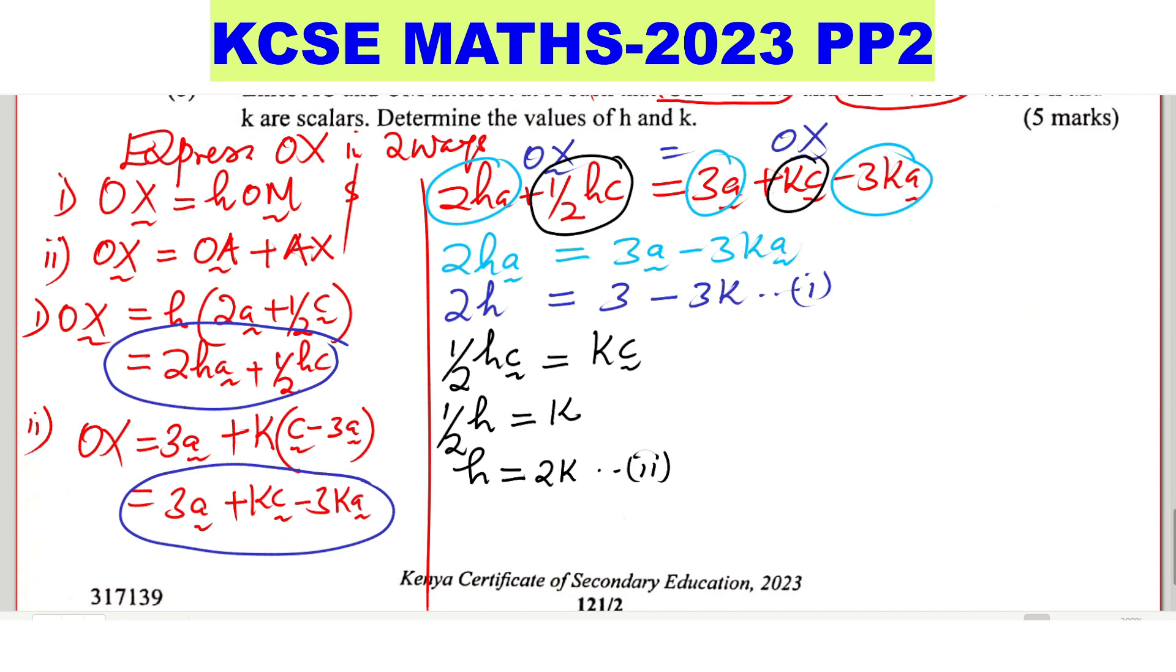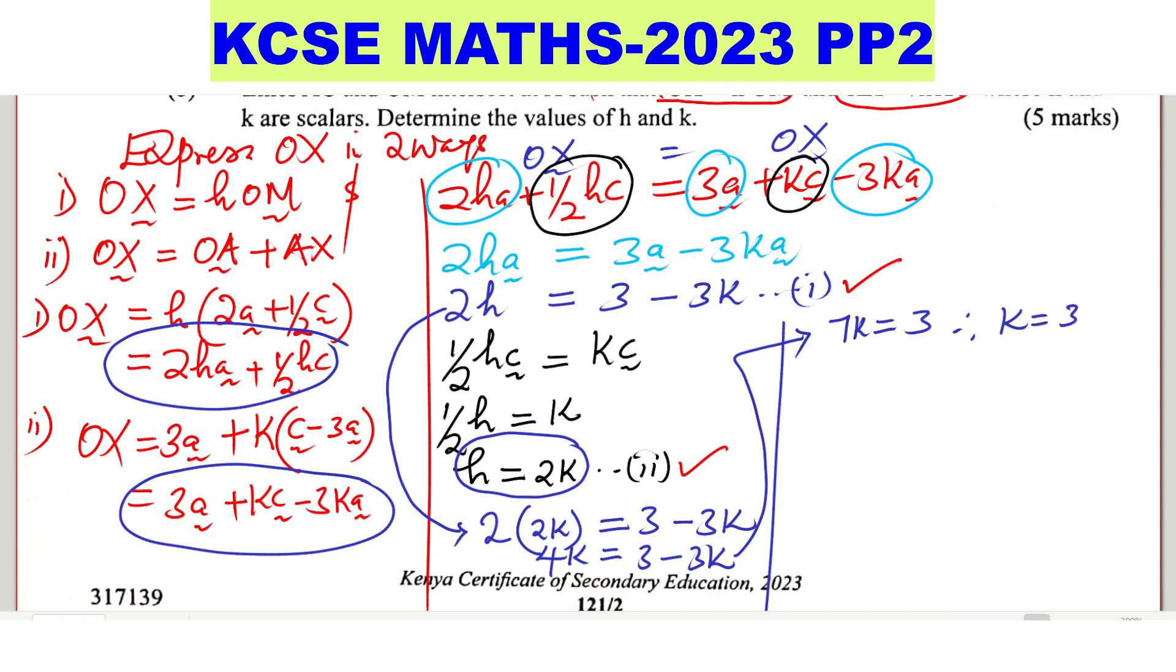So having those two equations, you have this equation and you have this. You can solve that simultaneously. I will use substitution. So I want you to have a look at this. What do you have here? 2h. But what is h? H is 2k. So substitute h with 2k. This will give 4k is equals to 3 minus 3k. And this one will give, bring the like terms together, you'll have 7k is equals to 3. And here, k is equals to 3 over 7.